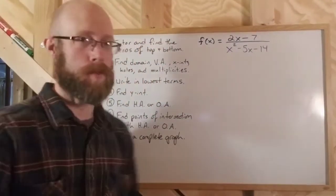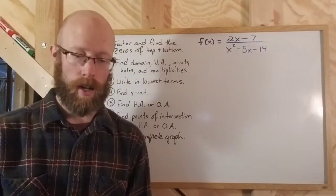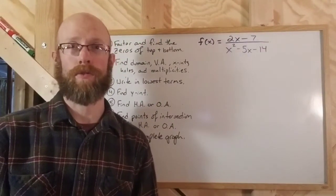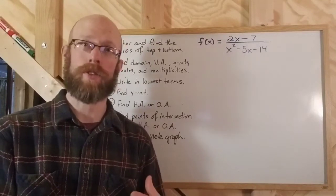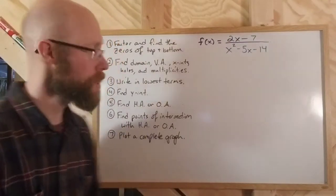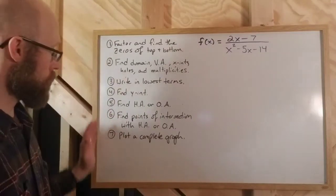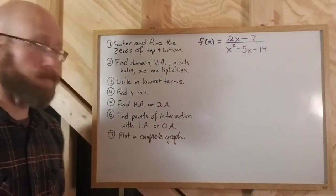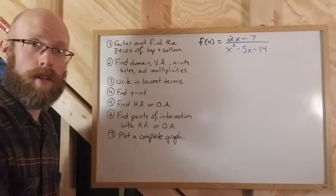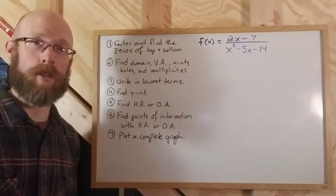I'm going to try to do this as much as I can without the use of technology like the graphing calculator, but maybe referring to it at the end just as a check to make sure we didn't make any mistakes. So that's our layout, and then the final step is to plot the complete graph — plot all the different pieces that we found and make sure they all work.